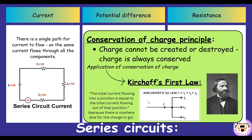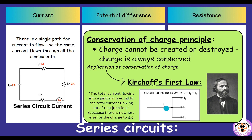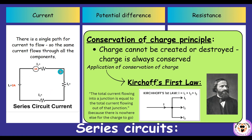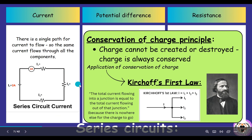The conservation of charge principle states that charge cannot be created or destroyed — charge is always conserved. Applying this to Kirchhoff's first law: the total current flowing into a junction must equal the total current flowing out of that junction, because there's nowhere else for the charge to go. In this diagram, I equals I1 plus I2 plus I3. In a series circuit with only one branch, the current must be the same everywhere.